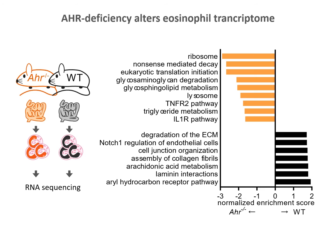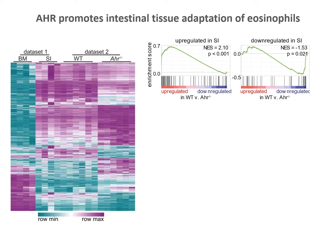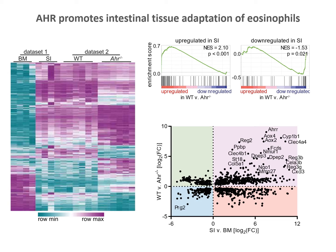Many of the pathways normally upregulated in small intestinal eosinophils were enriched in wild-type eosinophils, such as extracellular matrix degranulation and remodeling, cell junctions, and the AhR pathway itself. Genes normally upregulated in the small intestine compared to the bone marrow were enriched in wild-type eosinophils and vice versa. Many of the most highly upregulated genes in the small intestine were AhR-dependent, showing that AhR controls part of the tissue adaptation program of intestinal eosinophils.